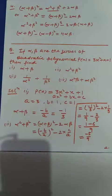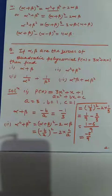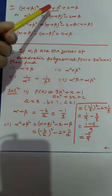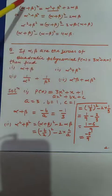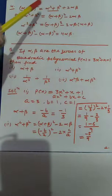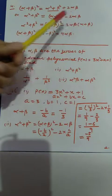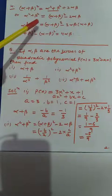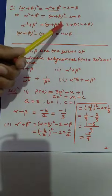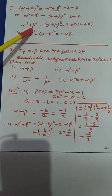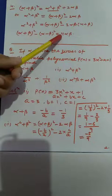There are some more results, and these are very important — they will help you in solving many problems. For example, alpha plus beta whole square equals alpha² plus beta² plus 2·alpha·beta. Rearranging, alpha² plus beta² equals (alpha plus beta)² minus 2·alpha·beta. Similarly, alpha³ plus beta³ equals (alpha plus beta)³ minus 3·alpha·beta·(alpha plus beta). Also, (alpha plus beta)² minus (alpha minus beta)² equals 4·alpha·beta.